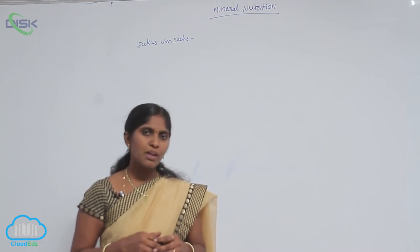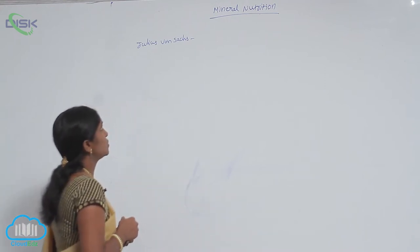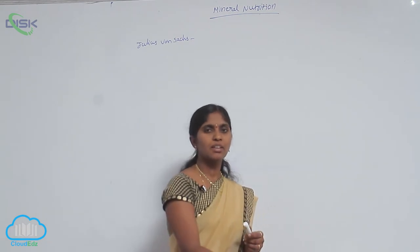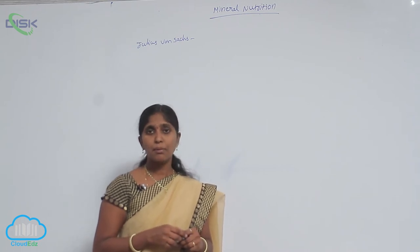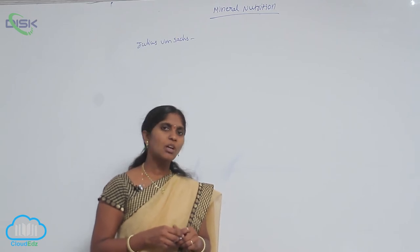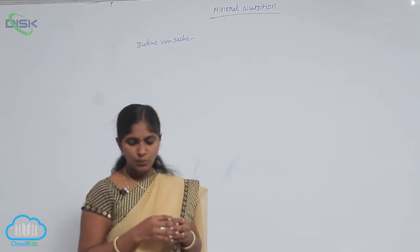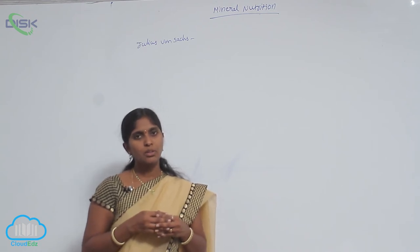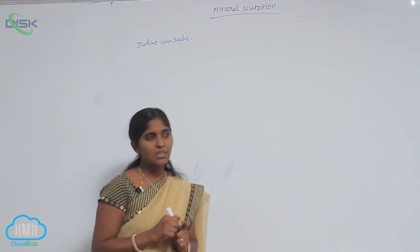Without soil, the plant can also survive. In the year 1860, Julius von Sachs explained that plants can live without soil — plants can grow under a nutrient medium without soil. He postulated that plants can grow in a nutrient medium, and he developed a technique for this.